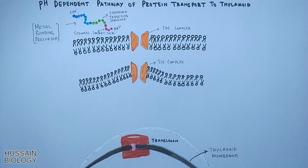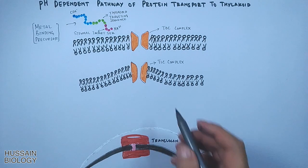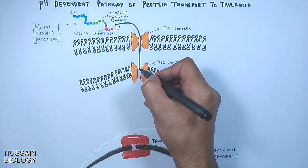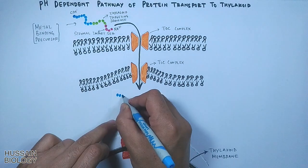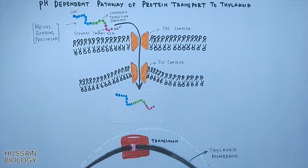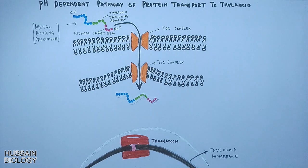First, the N-terminal import sequence directs the protein through the TOC and TIC complexes, which takes the protein into the stroma, as shown in the diagram. So now we have the protein transported into the stroma.